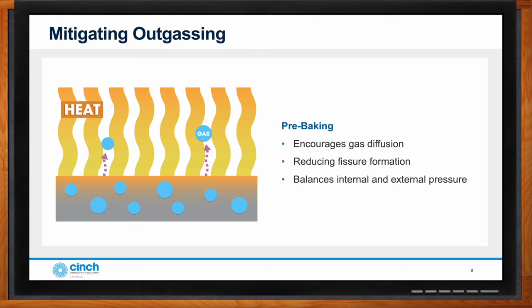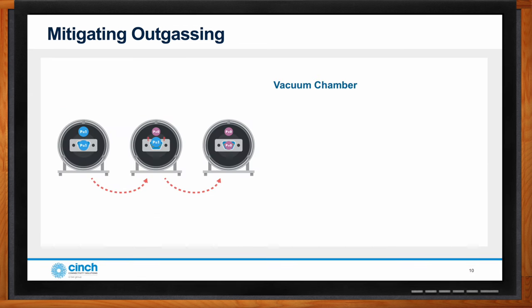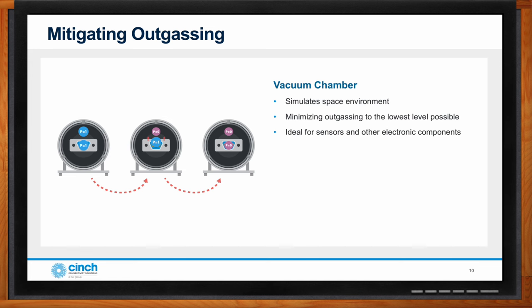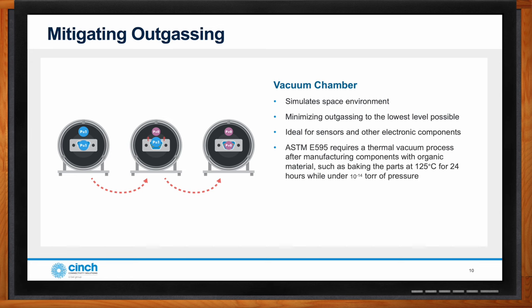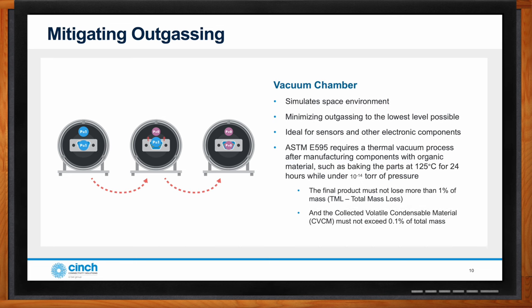We expose the products to a thermal vacuum bakeout process, placing the finished product into a thermal vacuum chamber at around 125 degrees Celsius for 24 to 48 hours. This reduces the amount of outgassing possible when the product reaches the low-pressure environment of space. The goal is to achieve a total mass loss (TML) of less than one percent and a collected volatile condensable material (CVCM) of no more than 0.1 percent of mass.